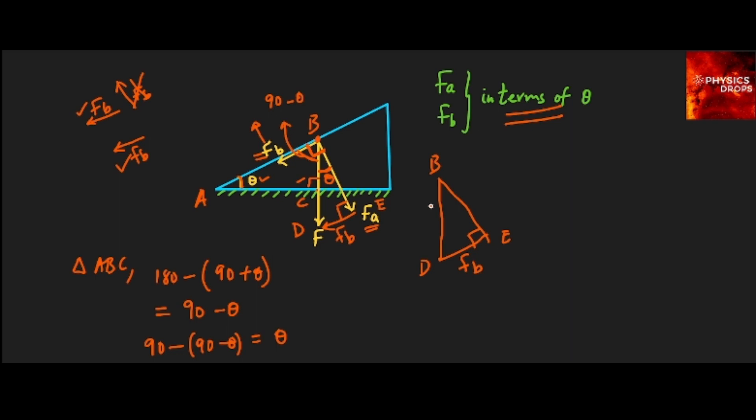Now this is FB, this is F, and this is theta, and this is FA. So now from this triangle we can find FA and FB in terms of theta because if I look at sine theta, that will be opposite side FB divided by F.